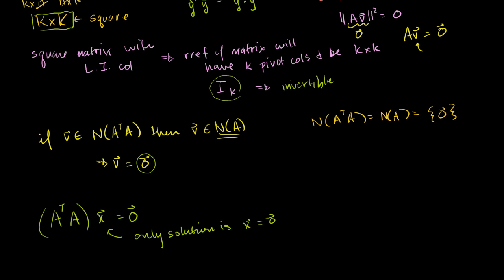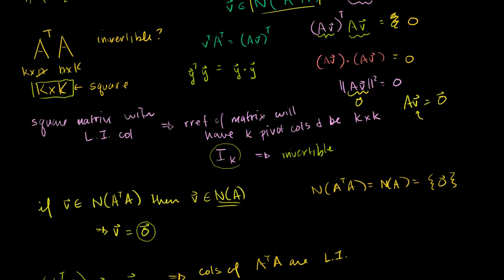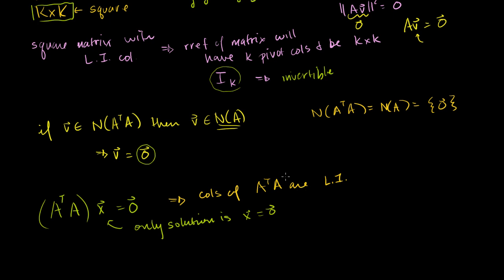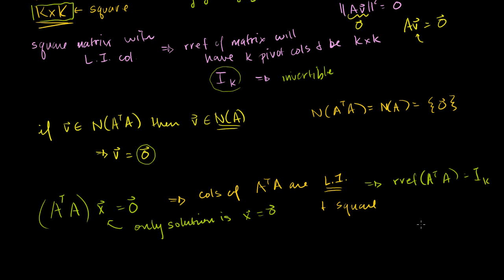So the null space of A transpose A equals the null space of A, which equals just the 0 vector. The only solution to A transpose A times x = 0 is x equal to the 0 vector, which means the columns of A transpose A are linearly independent. A transpose A has linearly independent columns and is a square matrix, so its reduced row echelon form is the k by k identity matrix, which tells us A transpose A is invertible.